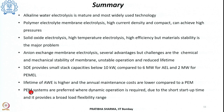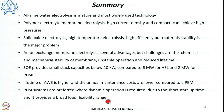Alkaline water electrolysis is less expensive due to its non-corrosive conditions and less expensive materials. PEM electrolysis systems are preferred when dynamic operation is required — they adapt to load variations very fast, have short startup times, and provide broad load flexibility, making them more suitable where dynamic operation and integration with variable renewable energy is needed.